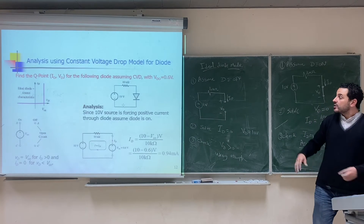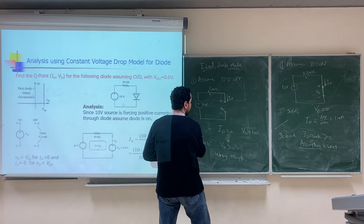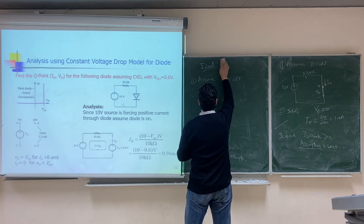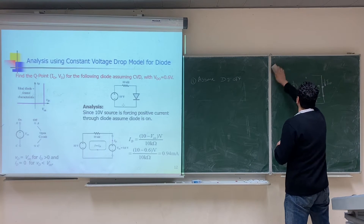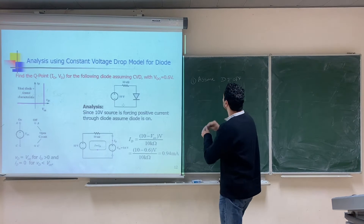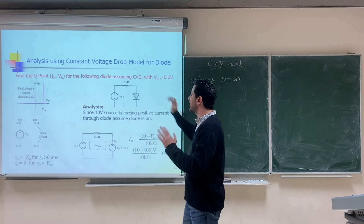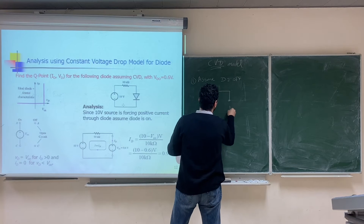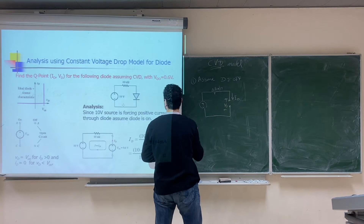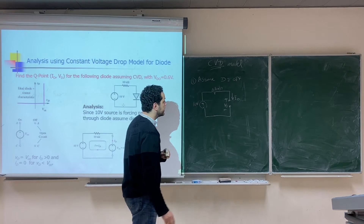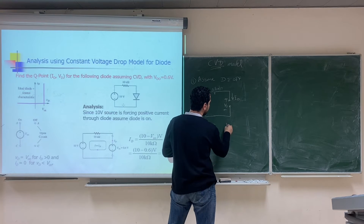The next example uses the constant voltage drop model on the same circuit. In the constant voltage drop model, if the diode is assumed off it is an open circuit; if assumed on, it is replaced by a battery V_D0. First, assume the diode is off — it is an open circuit. The circuit has 10kΩ and 10V. Solving: I_D = 0 (open circuit), V_D = 10V.